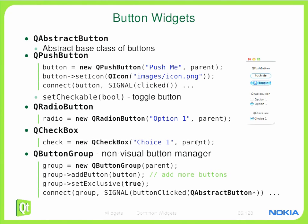To display an icon on the button, we use the setIcon method, which takes a QIcon object — in this case stored under images/icon.png. Then we can connect the clicked signal of the button to whichever slot holds the business logic. We can also create a checkable button by applying setCheckable to the button, thereby making it a toggle button.